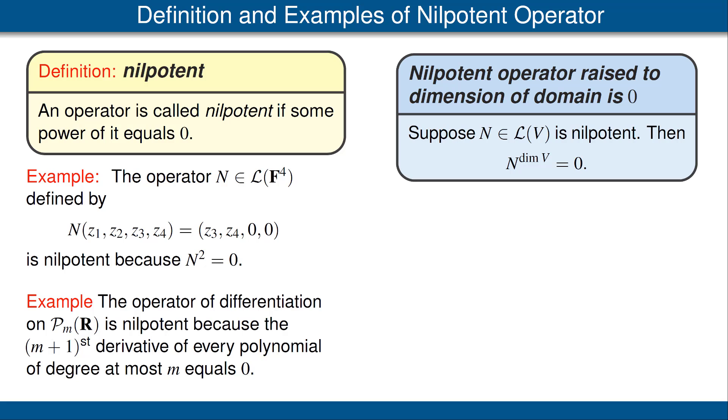Our next result states that if N is a nilpotent operator on V, then N raised to the power dimension V is equal to the zero operator.